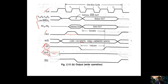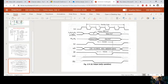For write operation, DT/R̅ is high during T2 to T4 — where data is available — and tri-state before T2. DE̅N̅ is also enabled only from T2 to T4. So there are only two changes from the read diagram: RD̅ becomes WR̅, and DT/R̅ changes from low (read) to high (write) during T2 to T4. The rest of the representation remains the same.